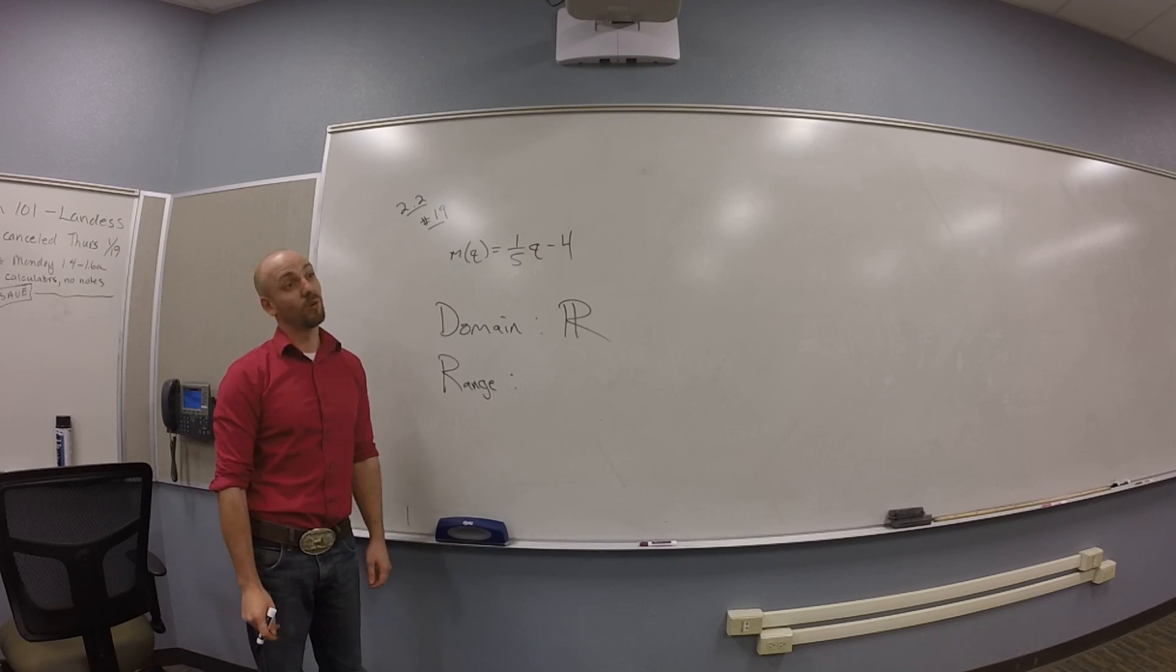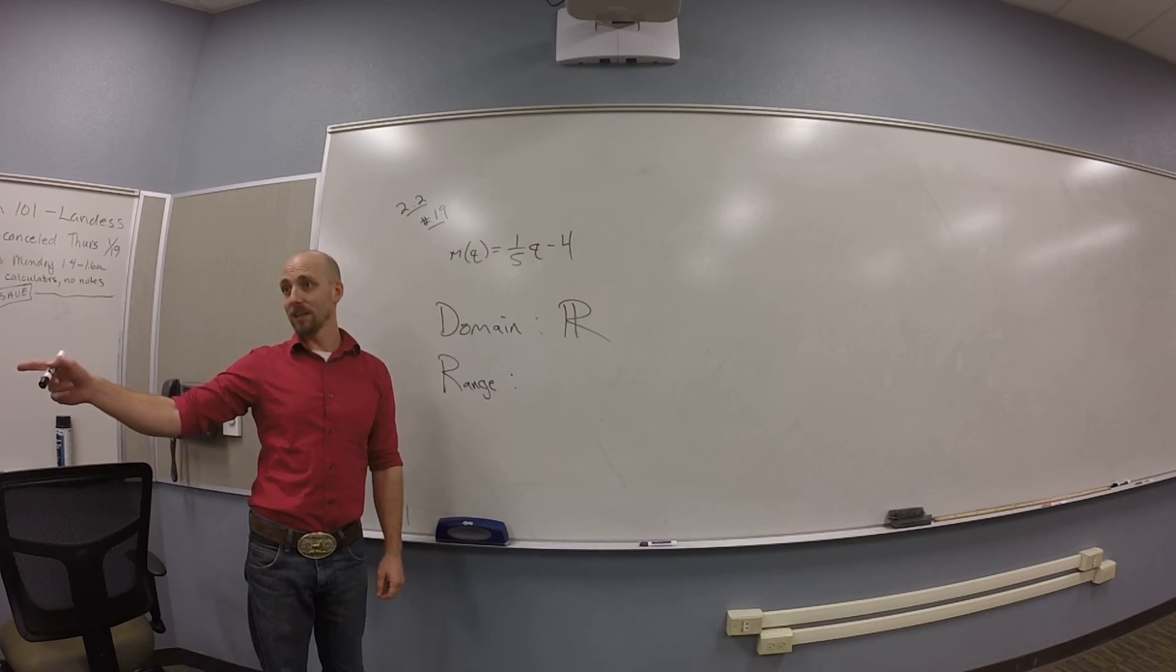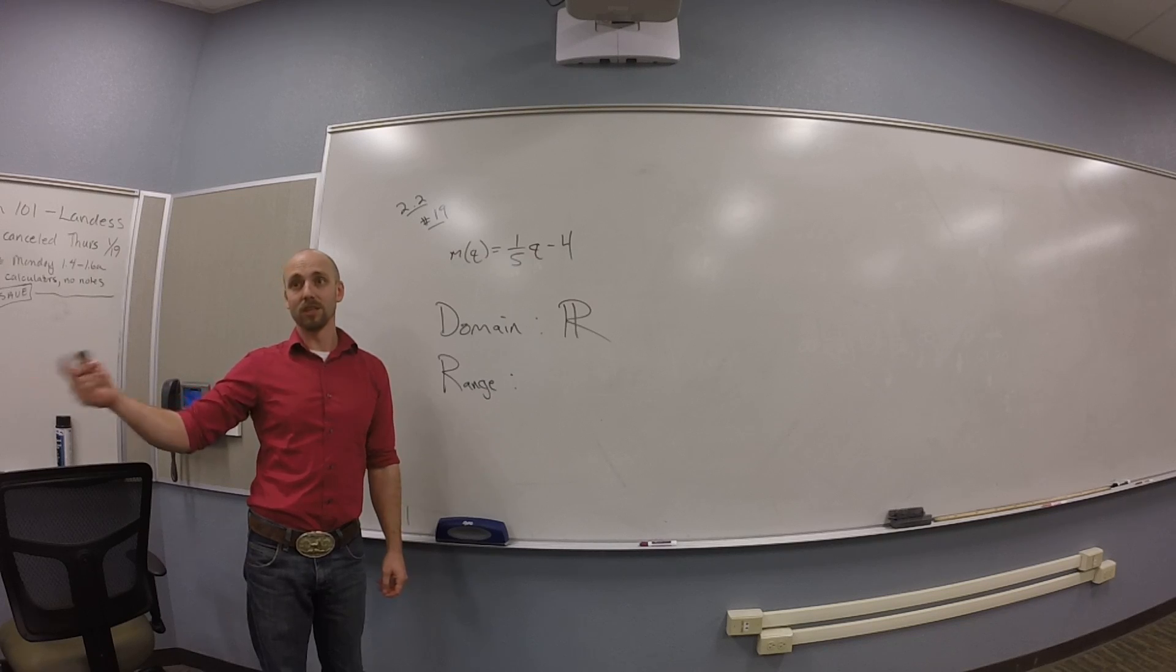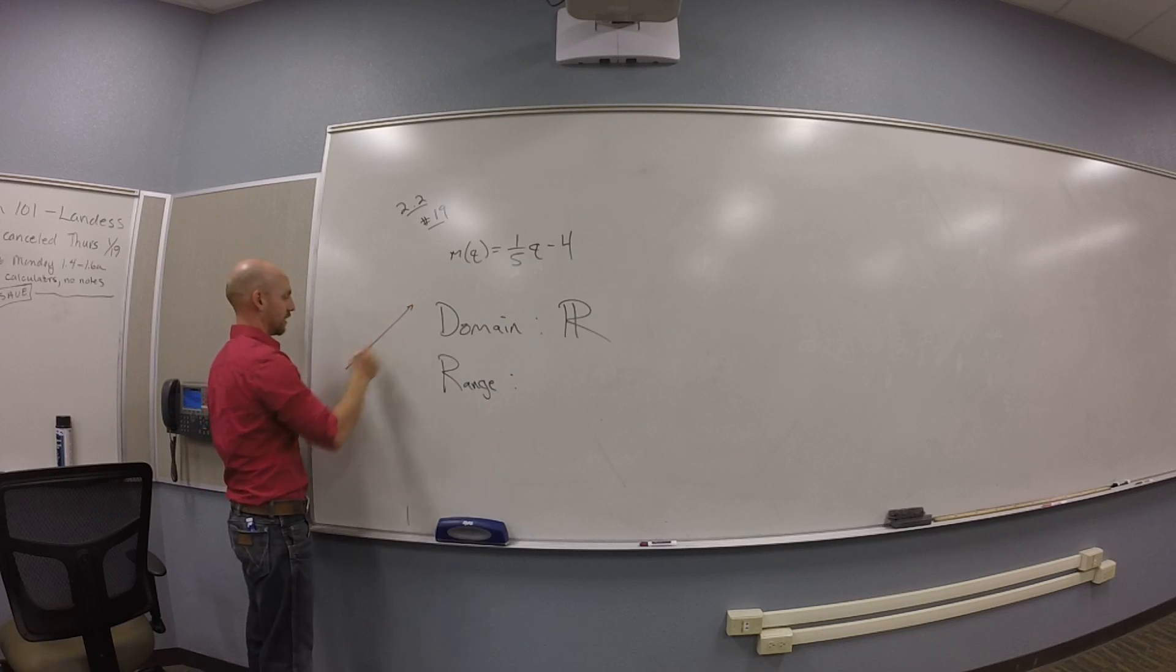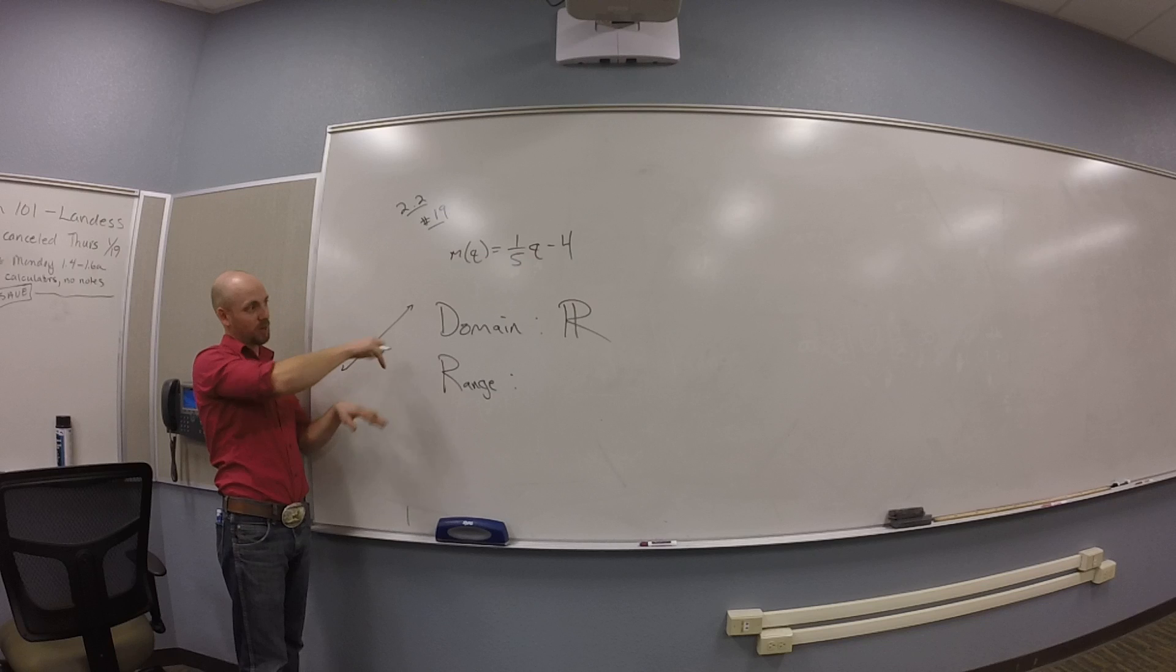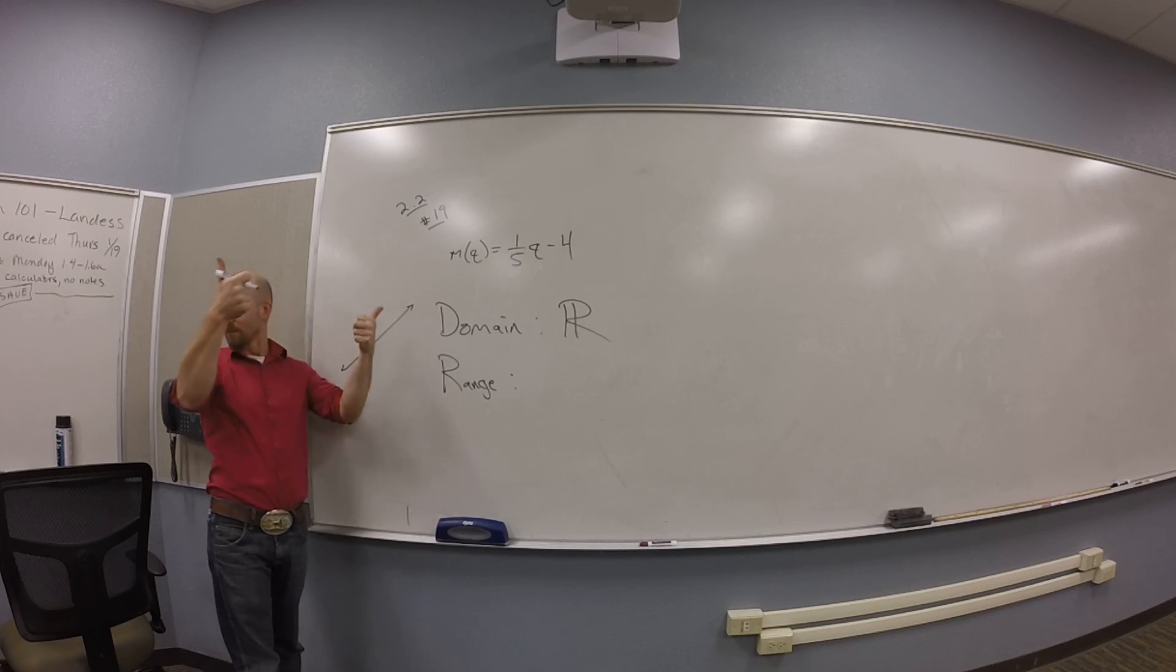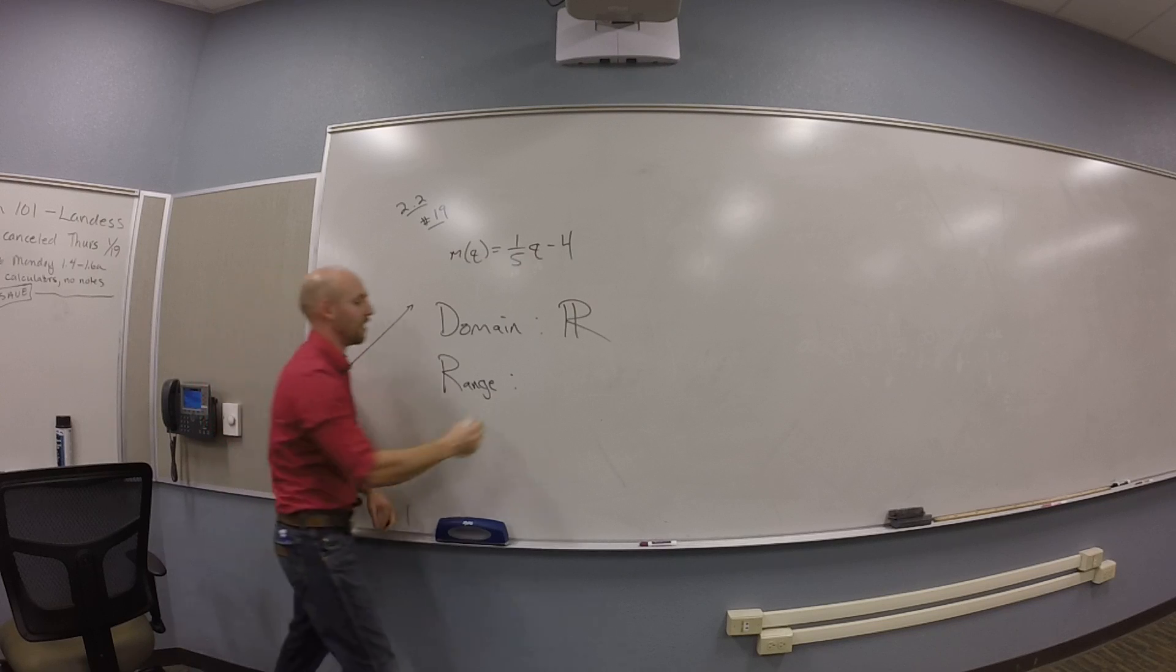So if it's a line, is it horizontal or vertical or regular? It's got a slope that's not zero, right? So it goes up some. So it looks probably like this. So if I smash this way, I get the domain. That's all of R. And if I smash this way? I get it again, all of R.